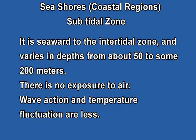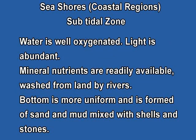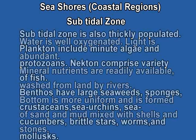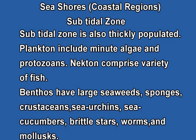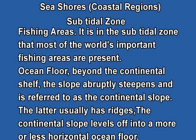The subtidal zone is seaward of the intertidal zone and varies in depth from about 50 to 200 meters. There is no exposure to air, wave action and temperature fluctuations are less, light is abundant, and water is well oxygenated. Mineral nutrients are readily available, and the bottom is more uniform, formed of sand and mud mixed with shells and stones. Subtidal zone is also thickly populated. Planktons include minute algae and protozoans. Nektons comprise a variety of fishes. Benthos have large seaweeds, sponges, crustaceans, sea urchins, sea cucumbers, brittle stars, worms, and mollusks.